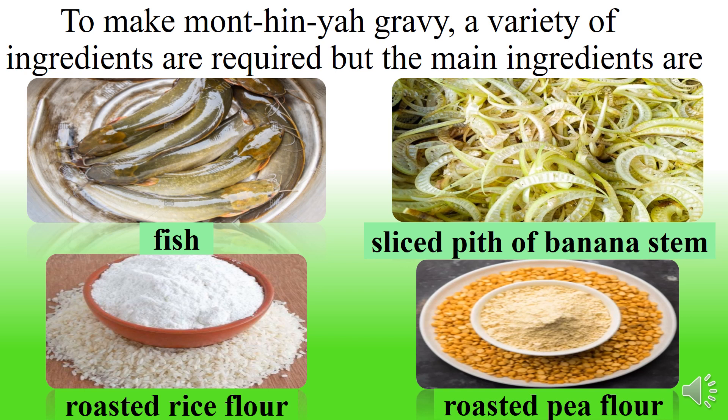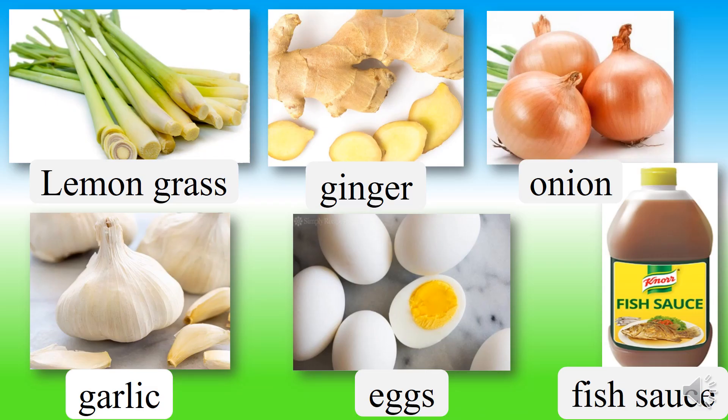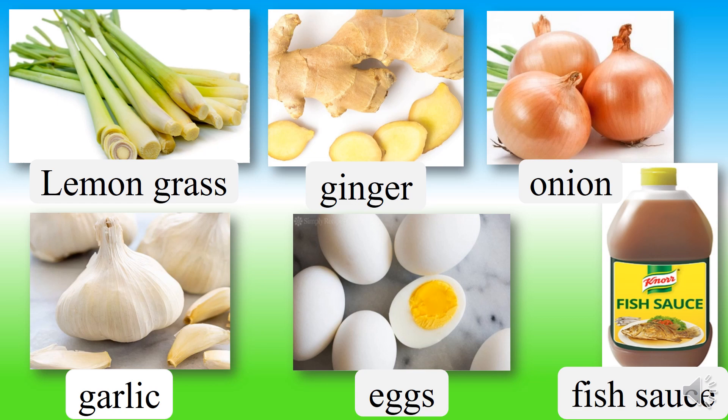The key ingredients include fish, a sliced bit of banana stem, roasted rice flour, and roasted pea flour. These form the base of the mohingya gravy.